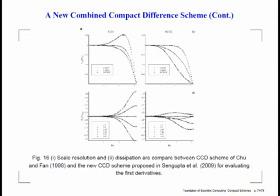This is the Chu and Fan CCD scheme, and this is what we have improved upon. We have simply called it the New Combined Compact Differencing scheme, or NCCD scheme. You can notice that the kind of overshoot seen before is not there. Although at j equal to 2 we accept lower resolution, because we do not want to inherit problems on the second derivative issue.